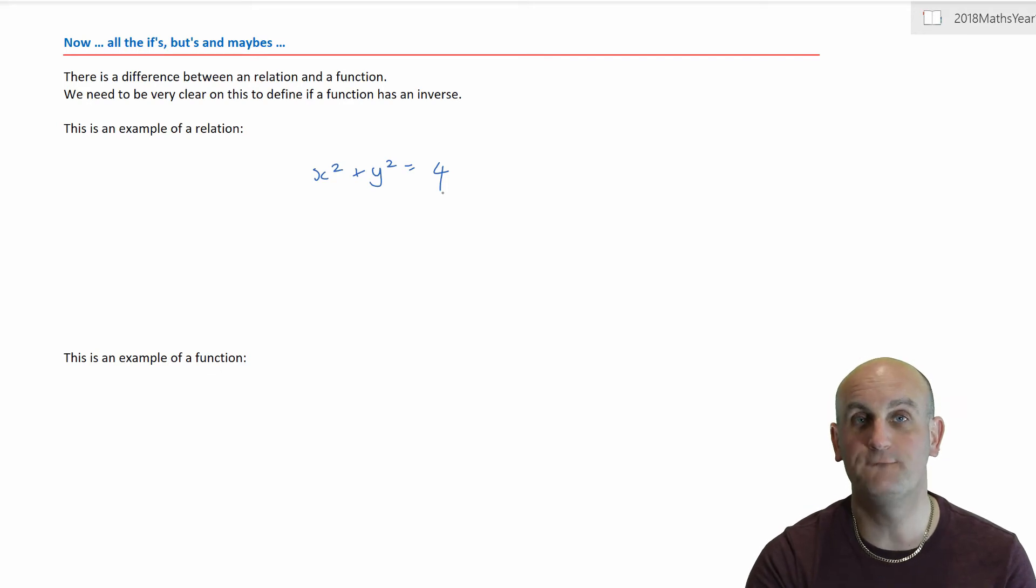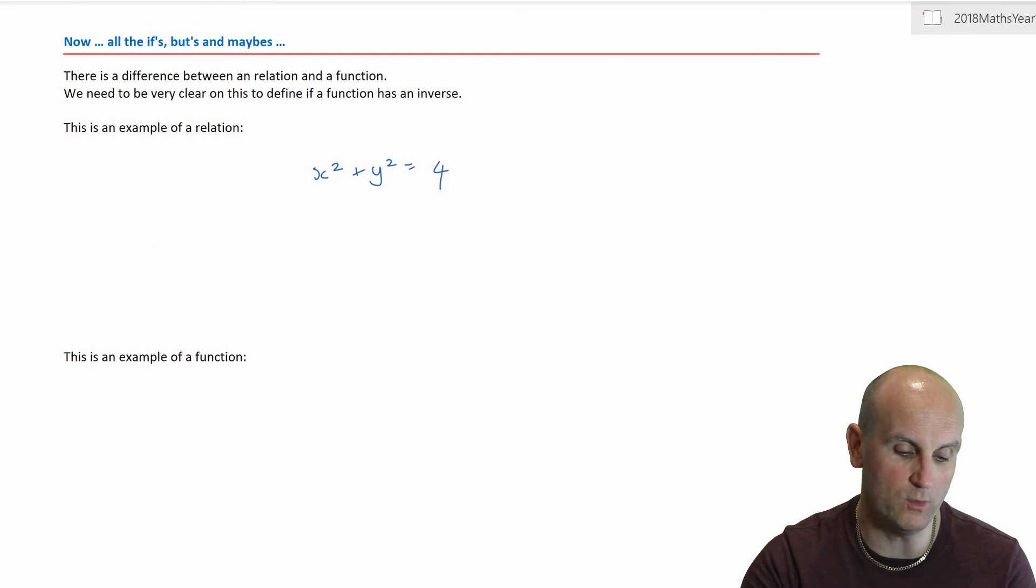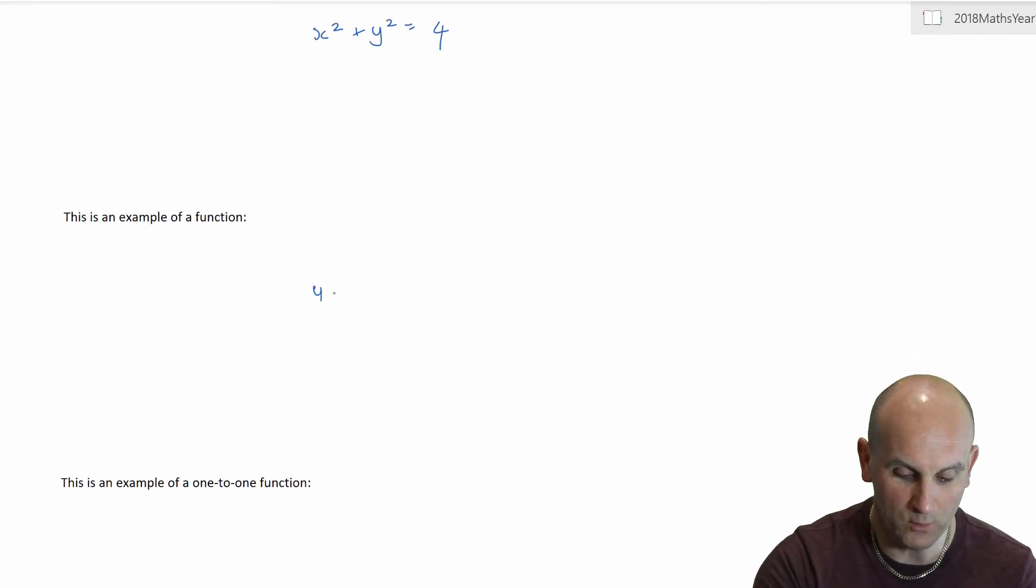But it is not a function because if you remember, what's the difference between a function and a relation? A function is where I draw a vertical line and it crosses through my equation or crosses through my graph at only one point for the duration of that function. Okay, so when you draw a vertical line, it can only cross through once.